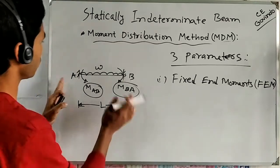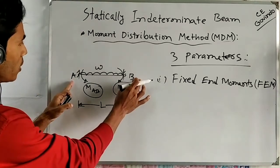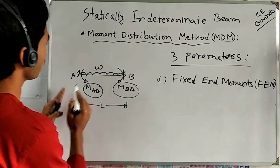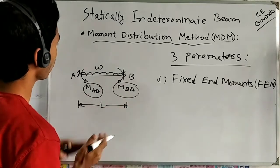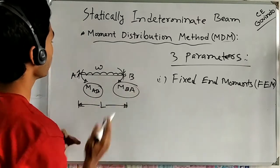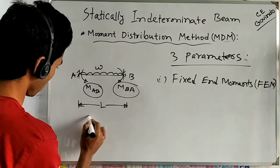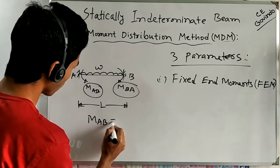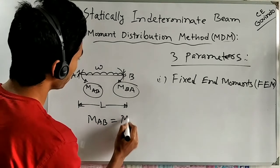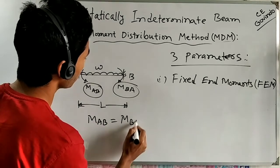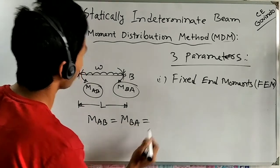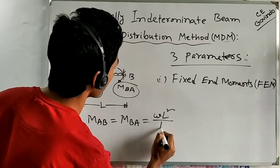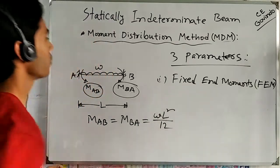For example, if the beam is loaded with a uniformly distributed load throughout the span, then Fixed End Moments M-AB will equal M-BA and can be found by the formula omega L squared divided by 12.